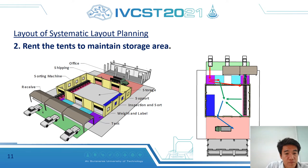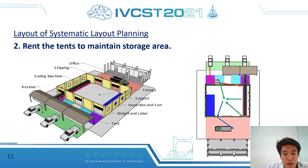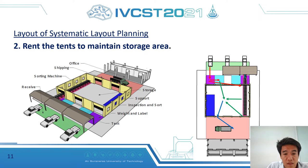The second concept uses vendor tents to maintain the storage area. They will rent three tents to increase the shipping area and keep storage and shipping space. The sorting machine is set up in the tent close to the building, and the inspection area and weight area are moved to the front outside the building. This concept has a cost of renting three tents sized 4x8 meters at 3,000 baht per year.